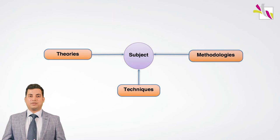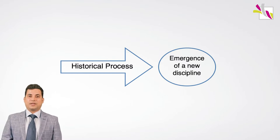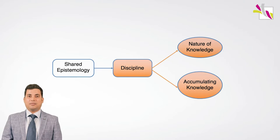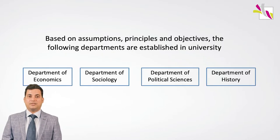Certain theories, techniques and methodologies are developed around subject matters. Therefore, emerging a discipline is a historical process. Key concepts are developed in the body of knowledge on the subject. A discipline is held together by a shared epistemology — that is, assumptions about the nature of knowledge and acceptable ways of accumulating knowledge. For example, principles of economics are different from the discipline of sociology because of differences in their theories of instruction and learning. This is how different departments in universities and institutes are established in knowledge creation.